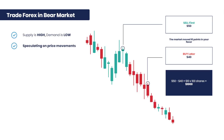When a trader shorts an instrument, it means they are selling it without owning the underlying asset, in the hope that the value of the instrument will fall to a lower level at which it can be bought back again at a lower price.